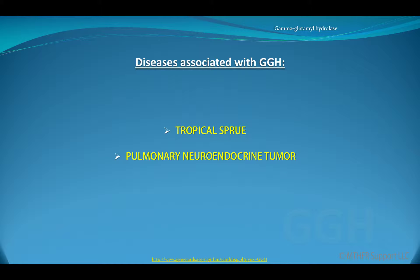Diseases associated with GGH are tropical sprue and pulmonary neuroendocrine tumor.